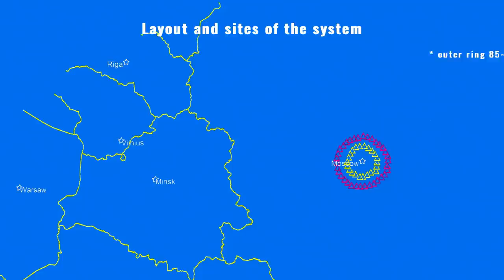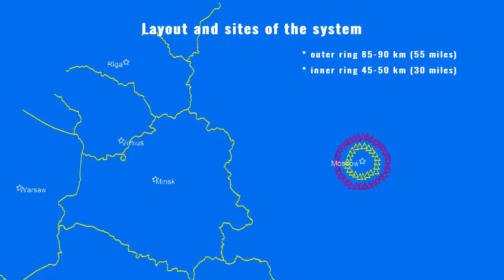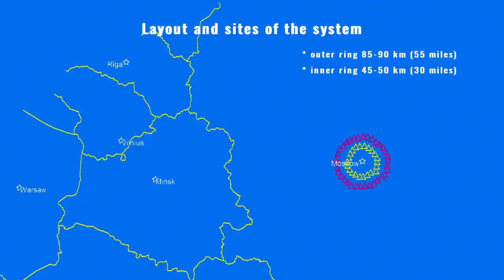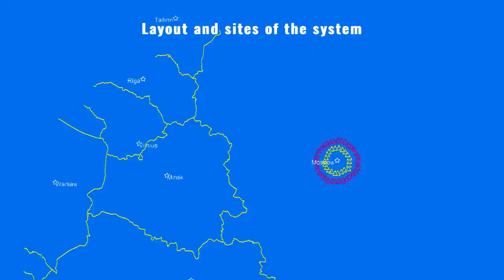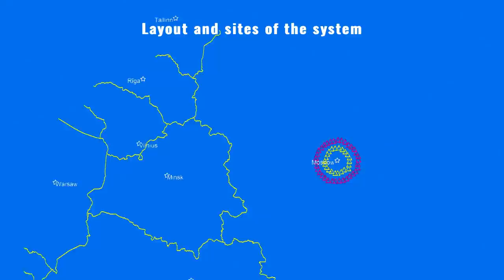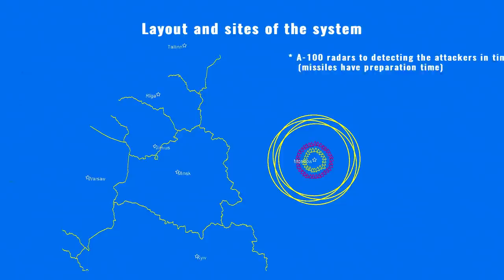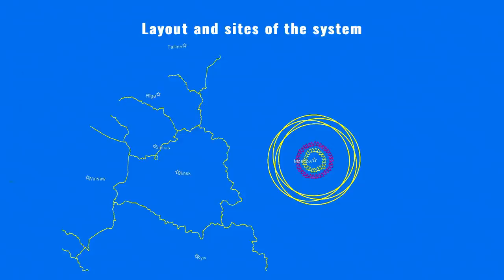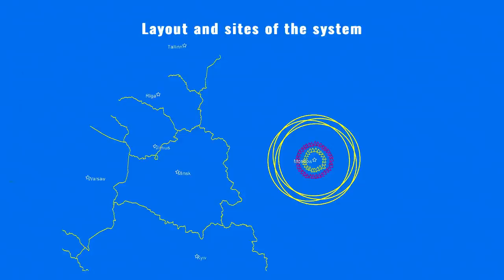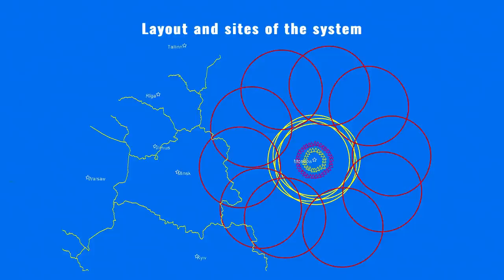The S-25 Berkut missile sites were built around Moscow, forming two concentric defense rings which protected the capital with equal efficiency in every direction against US strategic bombers. The outer ring was positioned about 85 to 90 kilometers from the city, while the inner ring was set up at 45 to 50 kilometers. Each SAM site was made out of a single missile regiment. The outer ring consisted of 34 regiments and the inner ring of 22 regiments, assigned to four different SAM division corps: the 10th, 6th, 1st and 17th. Additionally, A-100 long-range early warning radars were installed around Moscow to provide timely information about attackers. Ten A-100 radars were installed around 400 kilometers from Moscow, and four more were installed close to Moscow, with a nominal detection range against bombers of around 200 kilometers.